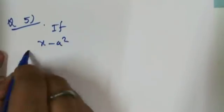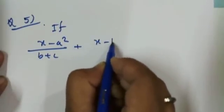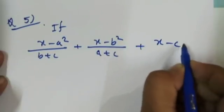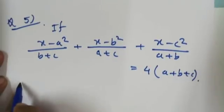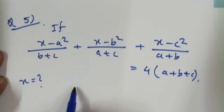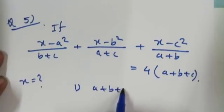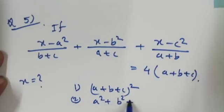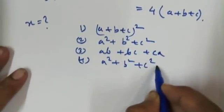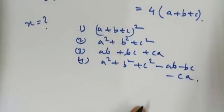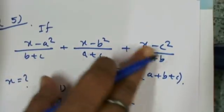Question number 5: (x−a²)/(b+c) + (x−b²)/(a+c) + (x−c²)/(a+b) = 4(a+b+c). What is the value of x? Options: 1) (a+b)², 2) a²+c², 3) ab+bc+ca, 4) a²+b²+c² − ab − bc − ca.